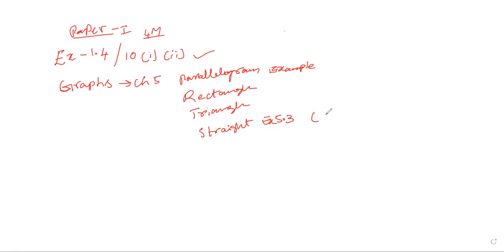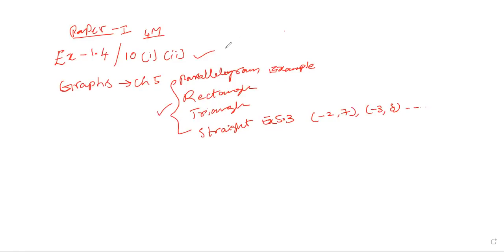So the points should be minus 2 comma 7, minus 3 comma 8. We have to check — if we take a point, we have to check. Let's check — the minimum is guaranteed. So we have to check, 4 marks.